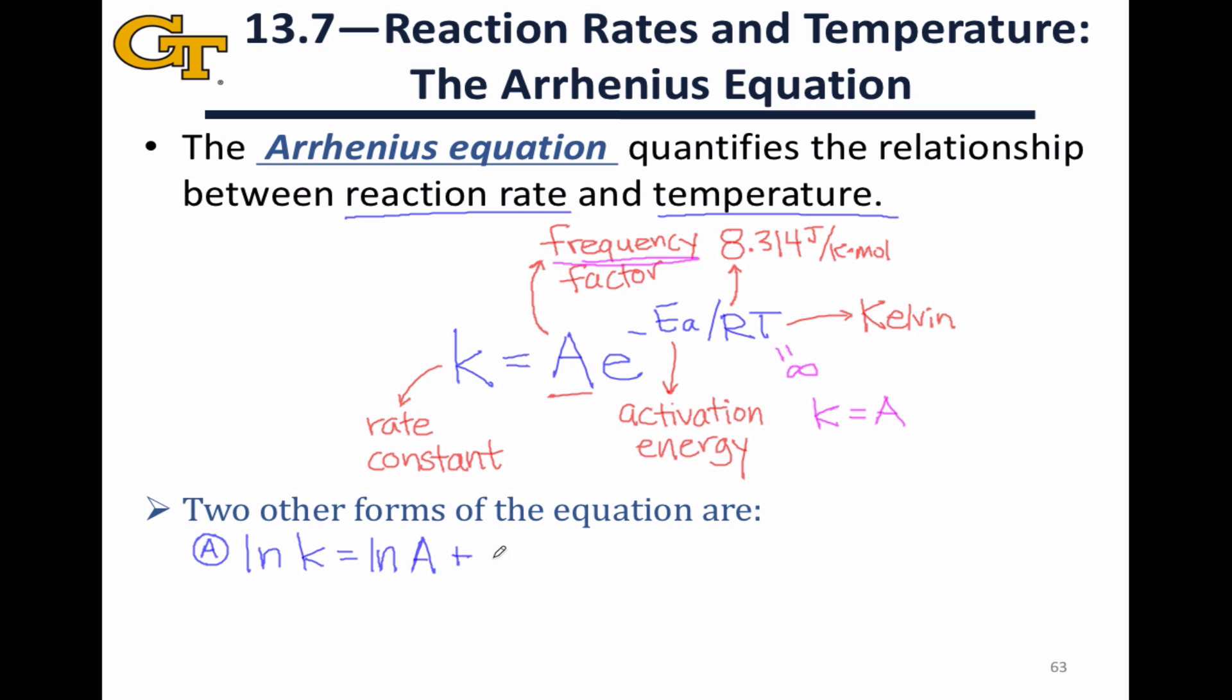This whole second term comes from applying the natural log to e to the negative Ea divided by RT. You'll often see this written without the plus and minus, just as the natural log of A minus Ea over RT.